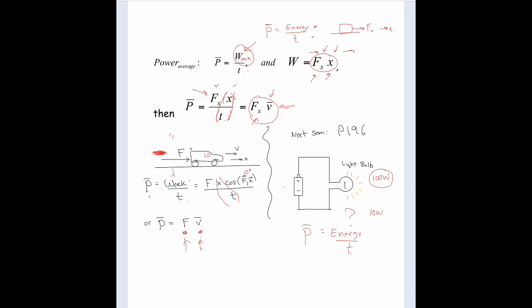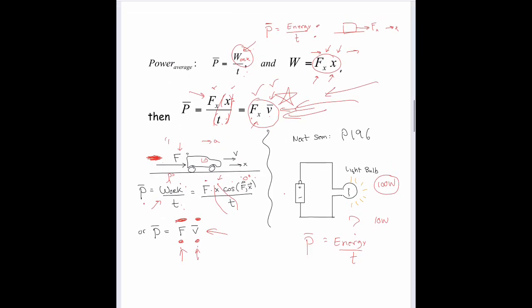The car is accelerating to the right, so there's a net force to the right. The average power that force produces to accelerate the car is work per time — and that's the force times the average velocity. The definition of work has a dot product, so you have the cosine of the angle between the force and direction it's going, which is zero degrees. So average power is force times average velocity. You can either think about average power as work done per time, or if given the force and average velocity, that also gives you the average power.